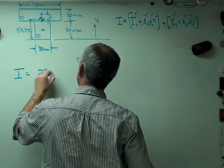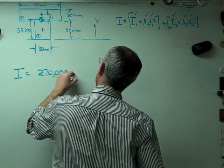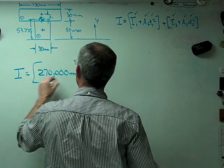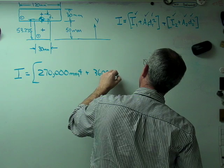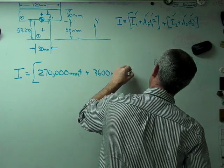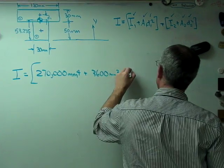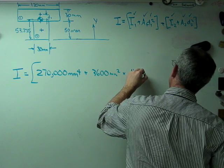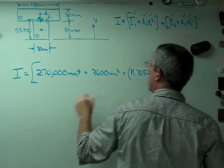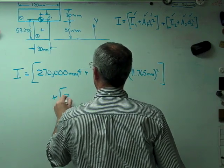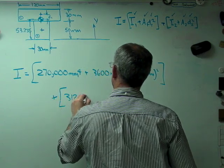I'm going to plug into that expression now. I1, 270,000, plus A1 times D1 squared. So that's 11.765 squared. And the second term now is 312,500,